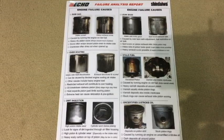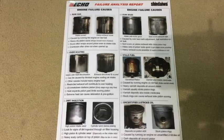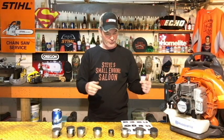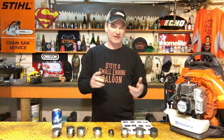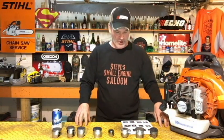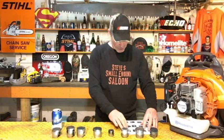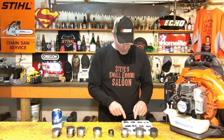This Echo cheat sheet has six common reasons your piston may be scored and how to figure out why. I'm going to take you through the first four that are not that common — burn through those quickly — and then leave the last two, the most common ones, till last so we can spend a little more time on those.